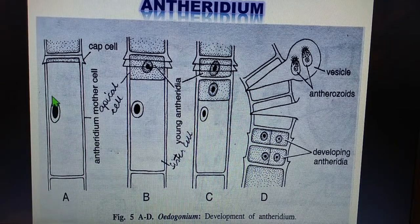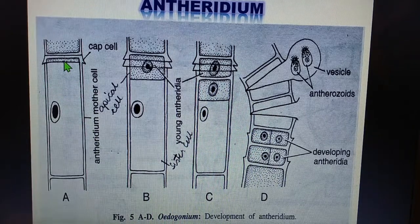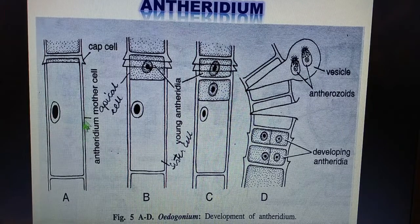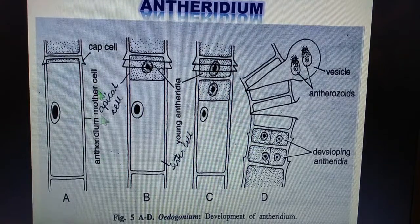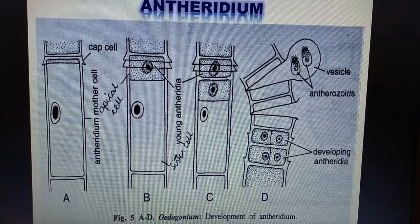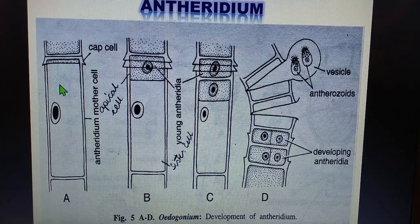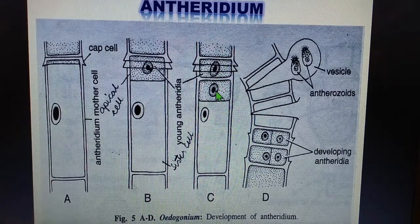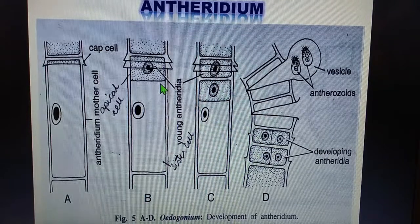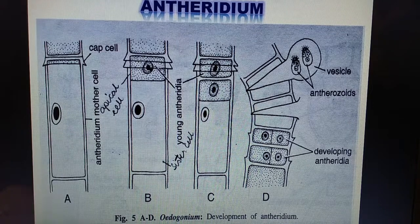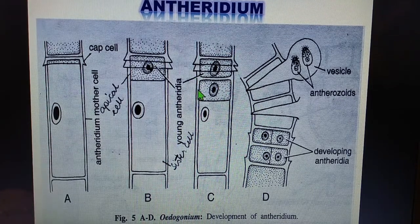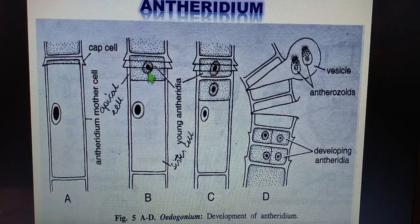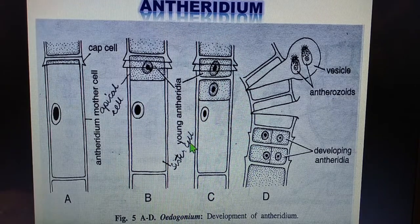As shown in figure A, a cell acts as the antheridial mother cell and contains a cap cell. Any cell of the filament with an apical cap can function as the antheridial mother cell. This cell divides transversely, as seen in figures B and C, into an upper smaller antheridial cell and a lower larger sister cell.